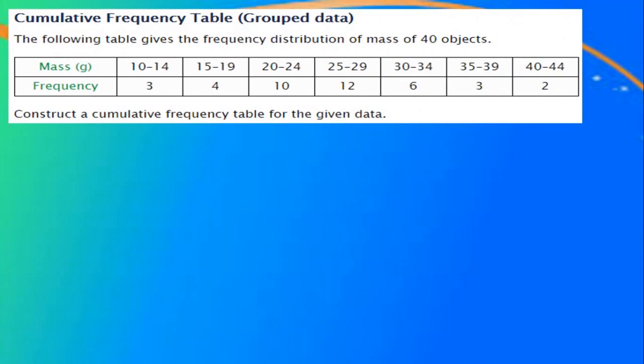The next question is given here. It is a grouped data. The grouped frequency table is given here and the frequencies are also given. We have to construct a cumulative frequency table for the given data. Look at the table — what is given there? The mass in grams.